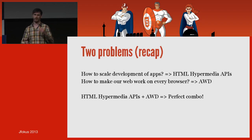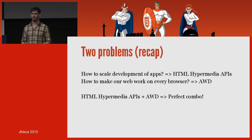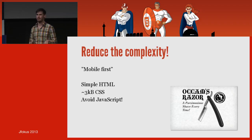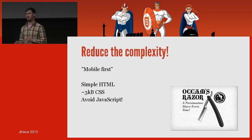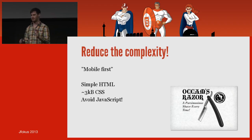Now let's tackle the second problem: how to make our web work on every browser. We should reduce the complexity of web pages and applications today — go for mobile first, serve really simple HTML with a minimum of CSS, and try to avoid JavaScript as much as possible, because you want fewer moving parts that can break. Don't say you should have no JavaScript — just avoid it as much as possible, perhaps only 3 or 5 kilobytes.